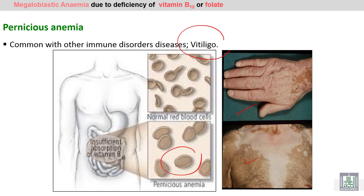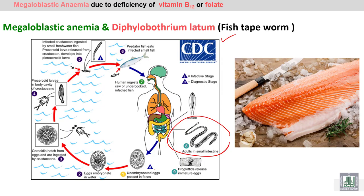Pernicious anemia is commonly associated with other immune disorders like vitiligo — as seen in the pictures showing change of skin color — and oval macrocytes are present on the blood film. Sometimes megaloblastic anemia occurs due to parasite infection in the small intestine that consumes B12 and folic acid.